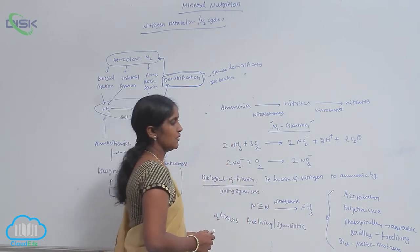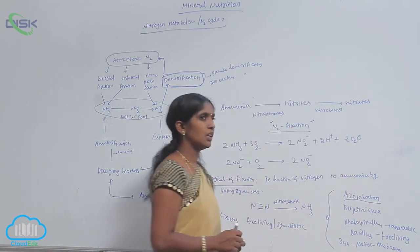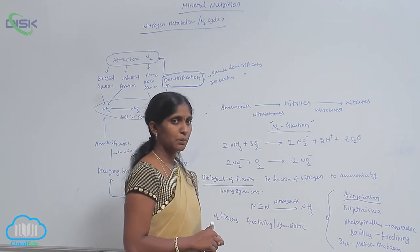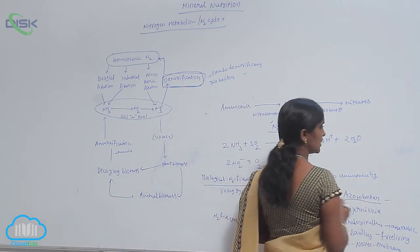For example, take Acetobacter. Acetobacter is a free-living bacteria; it is aerobic bacteria. It is also involved in nitrogen fixation.